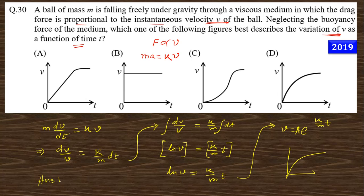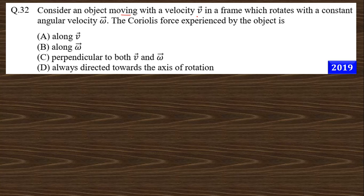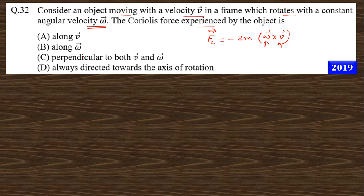The variation is an exponentially increasing function. So option number d is the correct answer for this question. Moving to the next one: consider an object moving with velocity v in a frame rotating with constant angular velocity omega. The Coriolis force is given by Fc equals minus 2m omega cross v. Since the Coriolis force is the cross product of omega and v, it is perpendicular to both omega and v. So option number c is the correct answer.